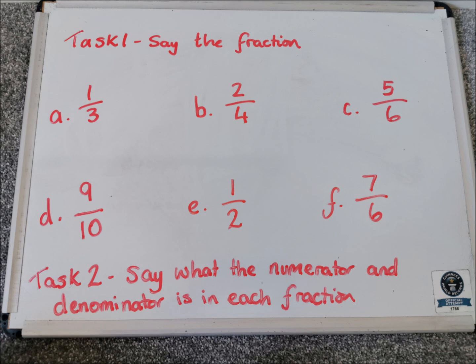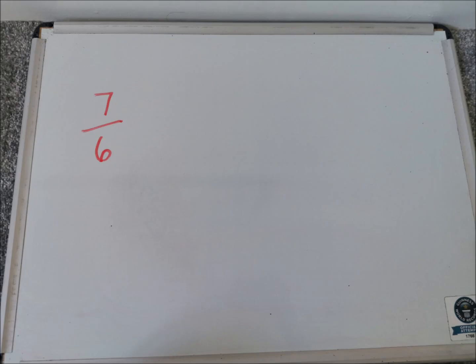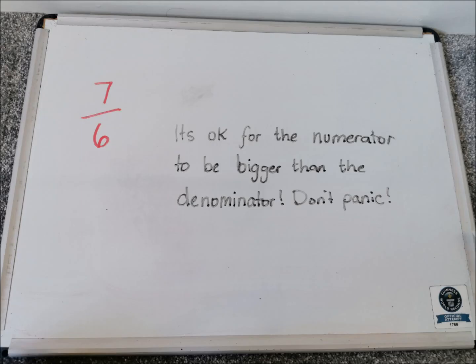You might have noticed that the last fraction there is a little bit different to the fractions that we've been thinking about so far. Usually when we see a fraction, the numerator — the number on top — is smaller than the denominator. But that last one, seven sixths, is not the case. The numerator is bigger, and this is absolutely fine. All it means is that you have got seven bits of sixths, so it means you've got more than one thing. Don't panic about it — it's perfectly normal. If you ever see a fraction with the numerator bigger than the denominator, it's fine. It's still a fraction, it's still a normal fraction.